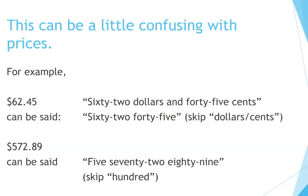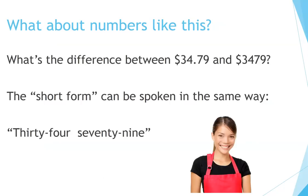This can be a little confusing with prices. For example, 62 dollars and 45 cents can be said '62, 45.' And 572 dollars and 89 cents can be said '572, 89.' What about the difference between $34.79 and $3,479? The short form can be spoken the same way: '34, 79.'